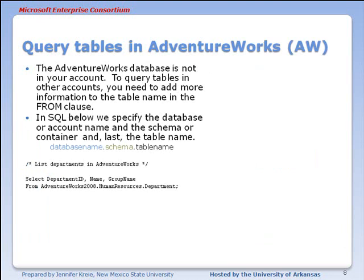Now let's take a look at some data from AdventureWorks — specifically listing the departments. Because you did not build AdventureWorks in your own account, you'll need to provide additional information: the database name, the schema or container name, and then the table name. This is called a fully qualified table name, specifying the database, the schema, and the table.